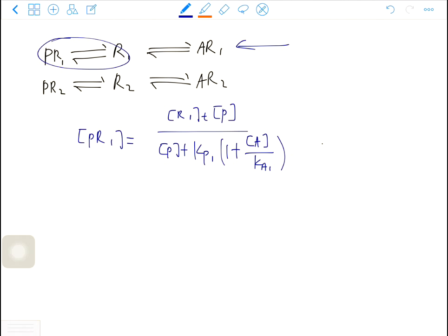So KP1 is the dissociation constant of this reaction, and KA1 is the dissociation constant for ligand A in this reaction. Similarly, we can also write an equation for PR2.